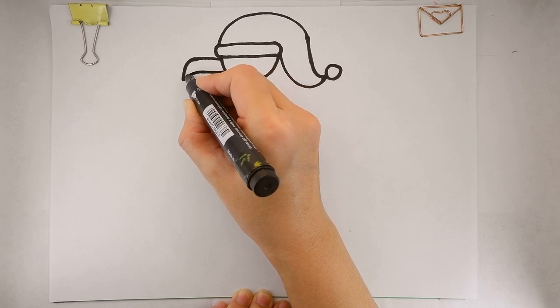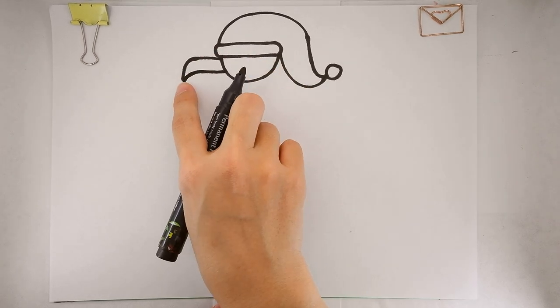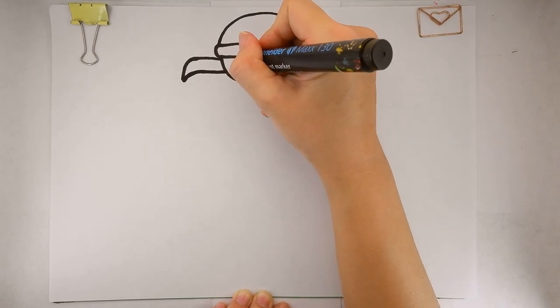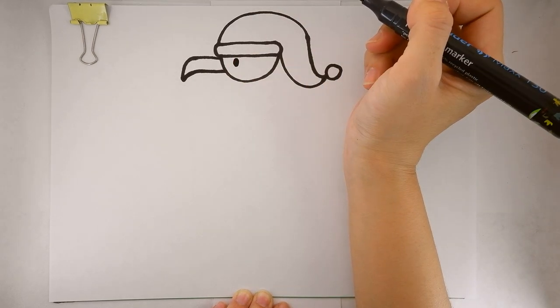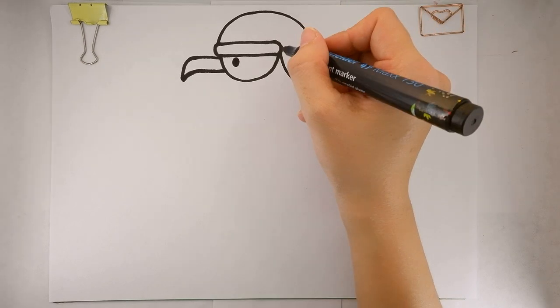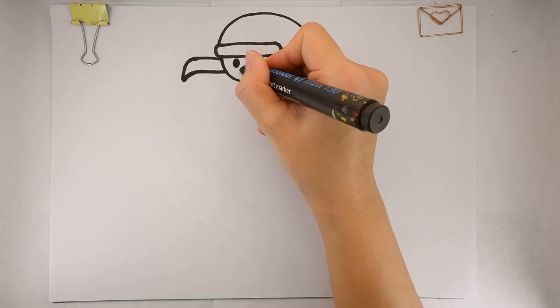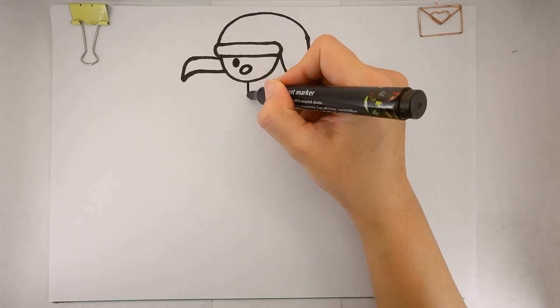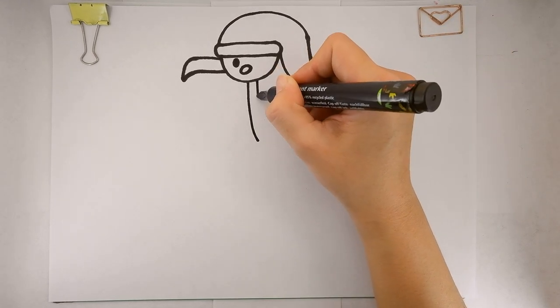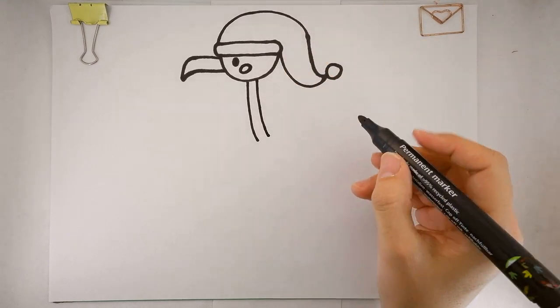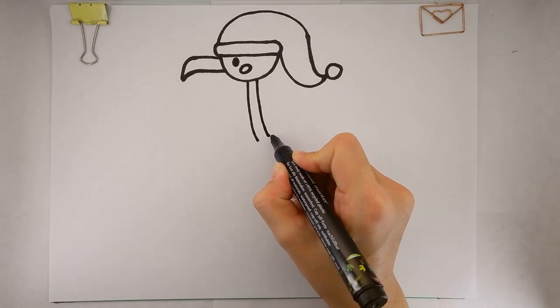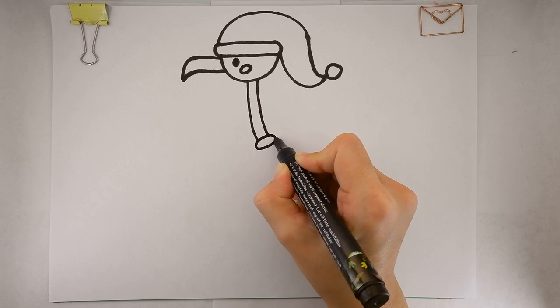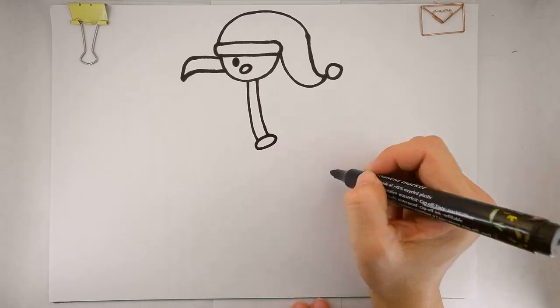Curve to the right side, then a small oval over here. Then let's draw a big oval for the body.